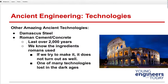Roman concrete has lasted over 2,000 years — we can't make concrete that lasts that long. That's the Colosseum; they're in the process of completely fixing it up. We know the ingredients, they listed them in their books, but when we make it, it doesn't turn out as well. It makes you think: what other technologies did we lose that we have to reinvent?